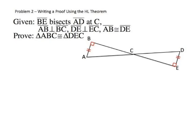The last thing in this lesson and this chapter is problem number two. We're going to write a proof using the Hypotenuse-Leg theorem. We're given that segment BE bisects segment AD at point C, that segment AB is perpendicular to segment BC, that segment DE is perpendicular to segment EC, and that segment AB is congruent to segment DE. We need to prove that these two triangles are congruent.